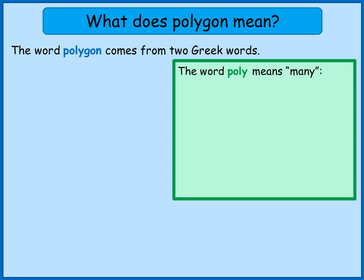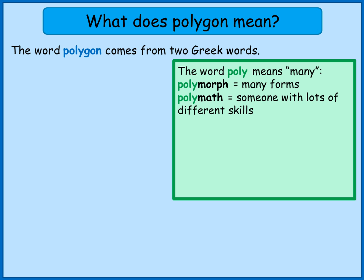We've got 'poly' at the start and that means many. Some English words you might have heard of: polymorph is a word that means many forms, so something with a lot of forms or a lot of different ways of presenting itself might be called a polymorph. And there's also the word polymath — somebody with lots of different skills, like languages, art, maths, and music. So poly means many.